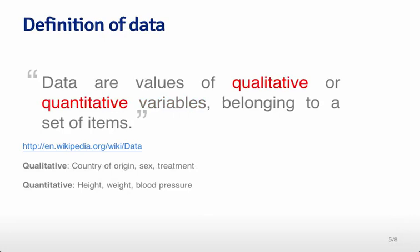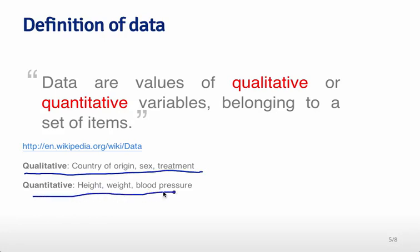Usually when we think about variables we think about things like this. Looking down here at the bottom, we think about country of origin, sex, and treatment as qualitative variables, and quantitative variables like height, weight, and blood pressure.